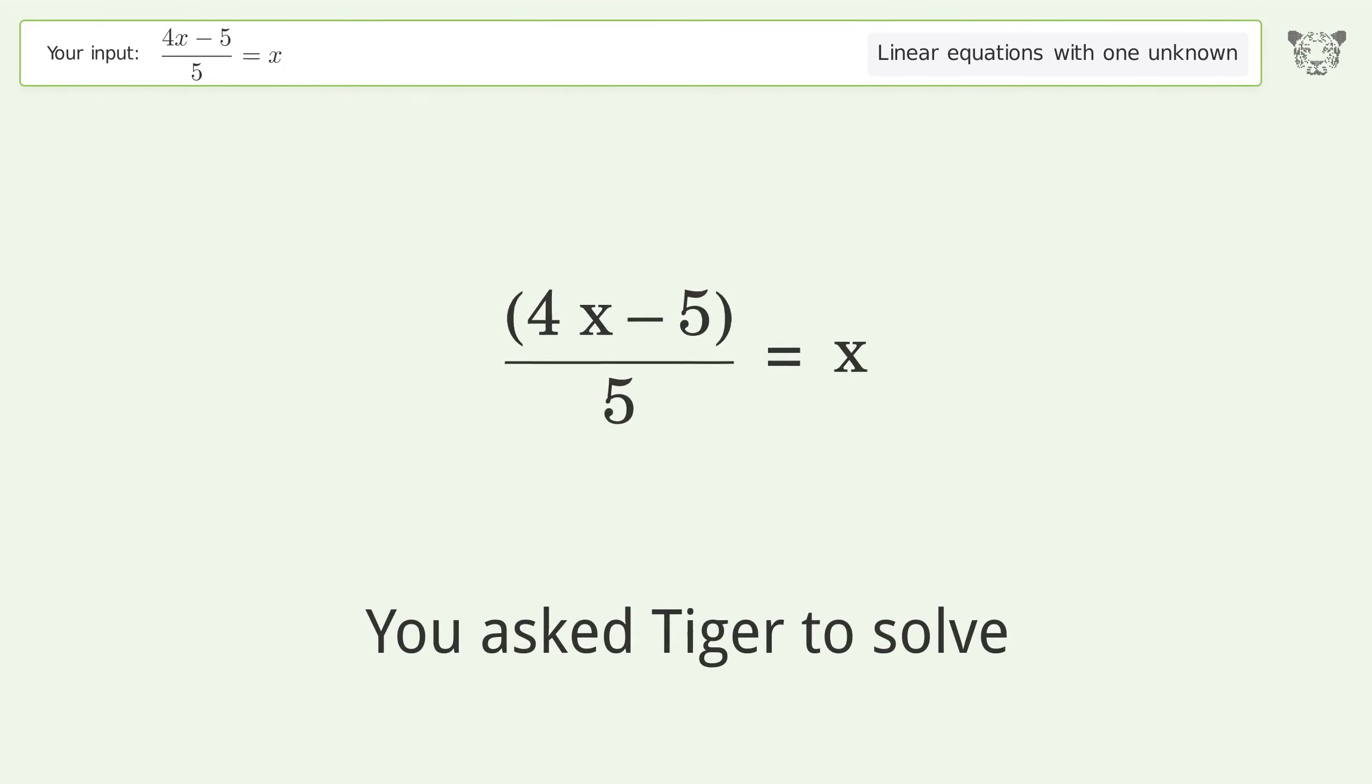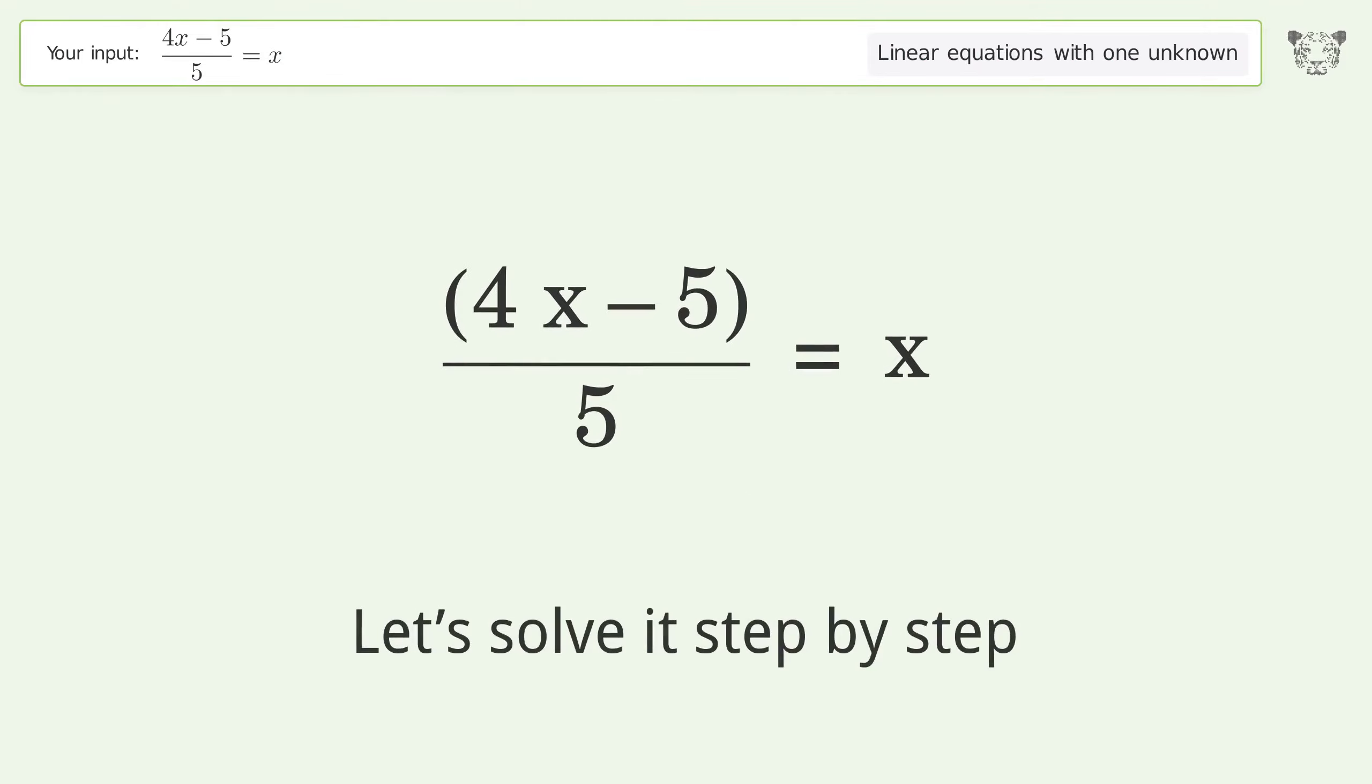You asked Tiger to solve this. This deals with linear equations with one unknown. The final result is x equals negative 5. Let's solve it step by step. Simplify the expression.